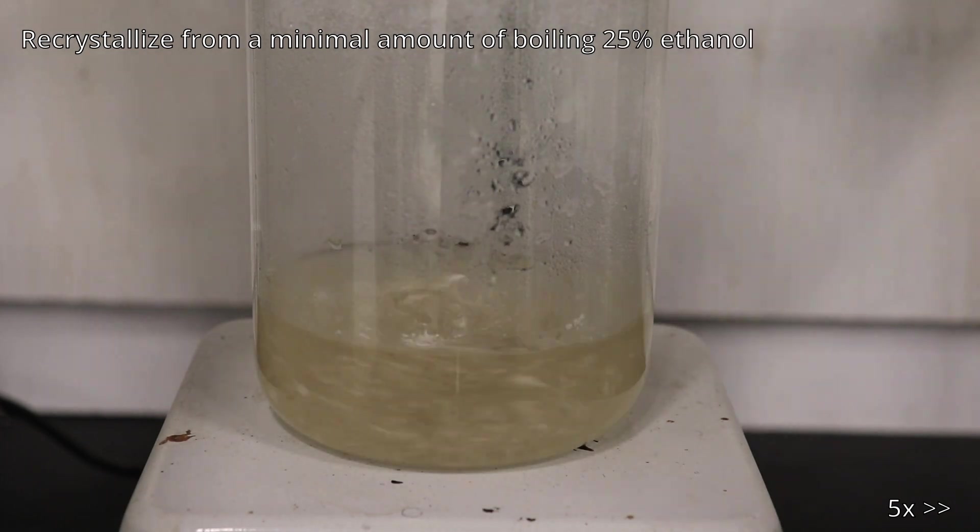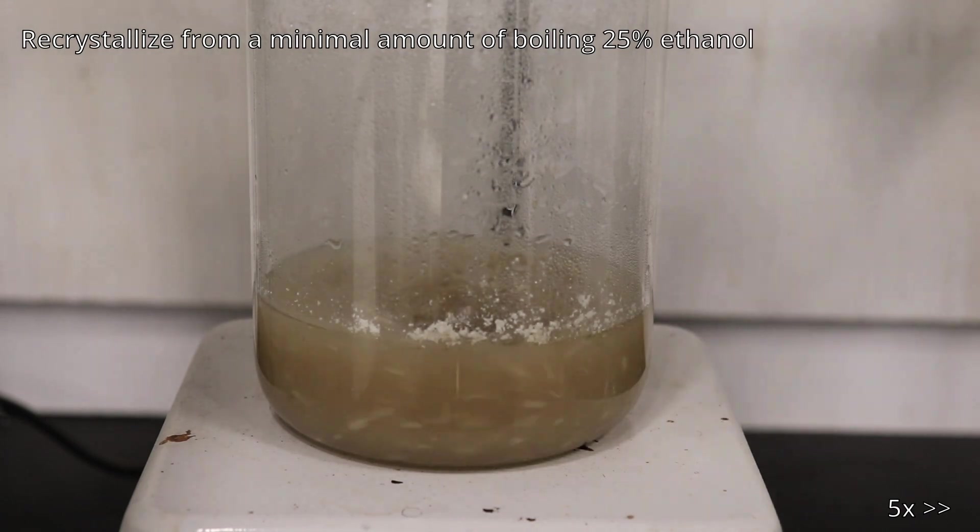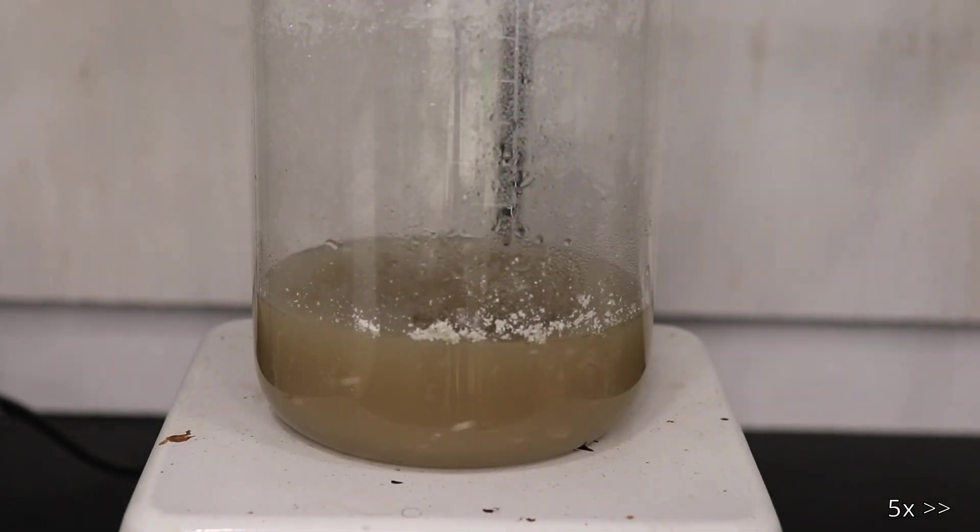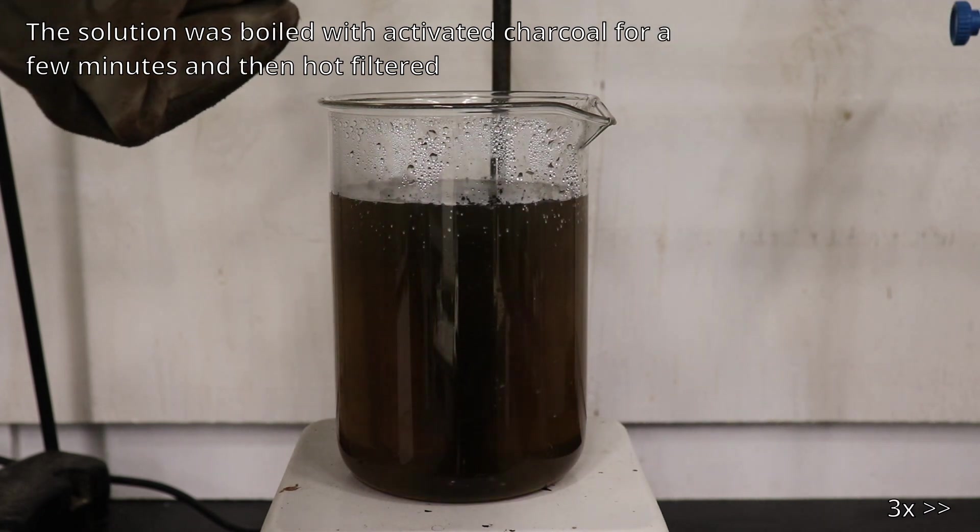The 2-naphthol was then dissolved in a minimal amount of boiling 25% ethanol, and to try and clean up the product, the solution was boiled with activated charcoal, and then hot filtered through a coffee filter and cotton plug.